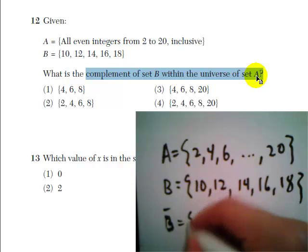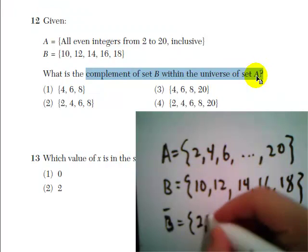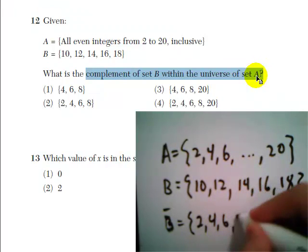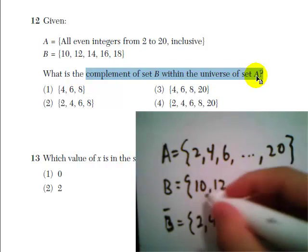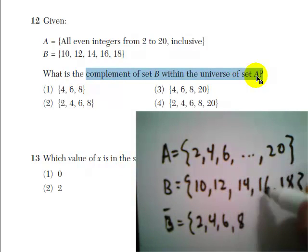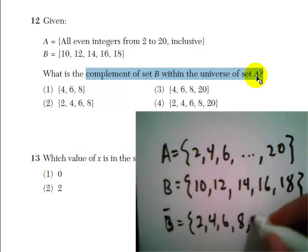Okay, so the complement of B will include 2, 4, 6, 8. Okay, now 10 is in B, 12, 14, 16, 18 are in B, 20 is not.